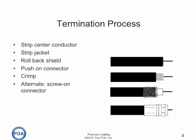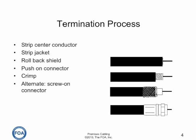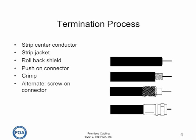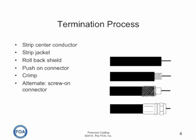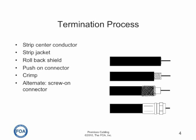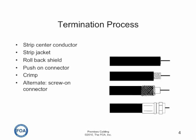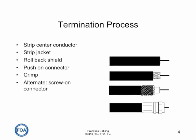The termination process for coaxial cable involves several steps. The first is to strip the center conductor and expose it, then to strip the jacket to expose the shield, push the connector on, and crimp it. There are alternative methods of holding the connector on, including screw-on connectors that simply screw onto the jacket, and compression connectors, which are the best ones because they make the best contact with the shield.